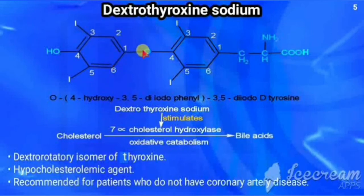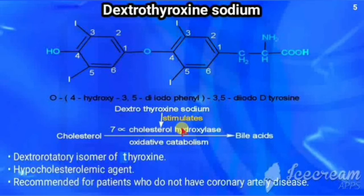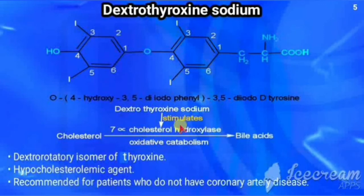A diiodohydroxyphenyl group is attached via oxygen, and with the phenyl ring two iodines are attached. The chemical name is O-(4-hydroxy-3,5-diiodophenyl)-3,5-diiodo-D-tyrosine. Dextrothyroxine stimulates the enzyme 7-alpha-cholesterol hydroxylase, which converts cholesterol into bile acids by oxidative catabolism. Because of this, cholesterol is converted to bile acids, making it a hypocholesterolemic agent.